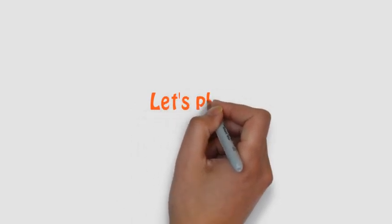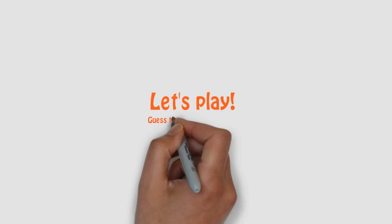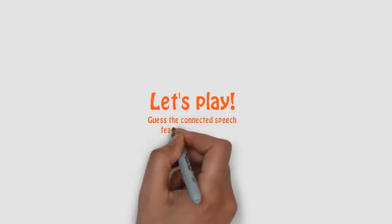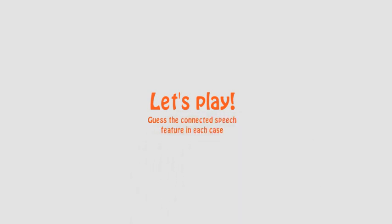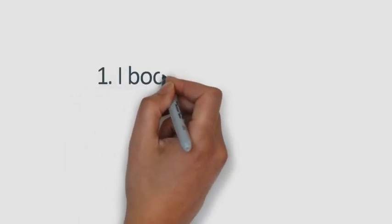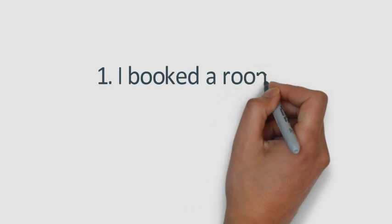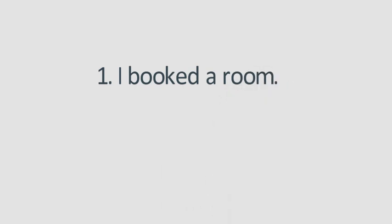Easy, right? So now, to finish this video explanation, let's play for a while. Try to guess the connected speech feature in each phrase or sentence. It'll be a little easier for you because the letters whose sounds interest us for the exercise have been written in a different color. Number one: 'I booked a room.' You now have ten seconds to think of an answer.